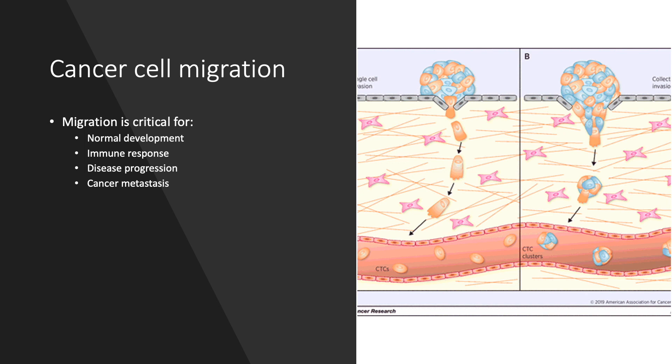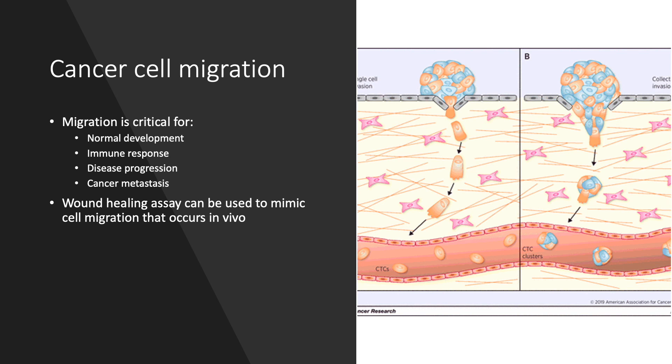During the progression of cancer, tumor cells spread from the primary site and through the circulatory and lymphatic systems in order to reach and colonize distant organs. There are several ways to study cell migration, but the wound healing assay is one of the simplest and low-cost methods that uses materials readily available in most research labs.